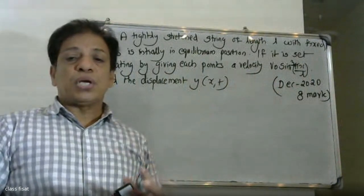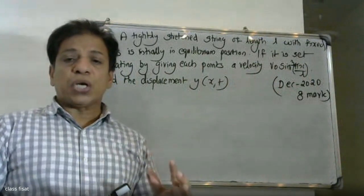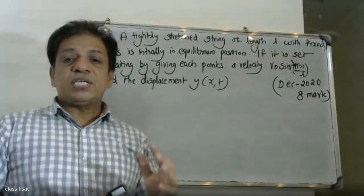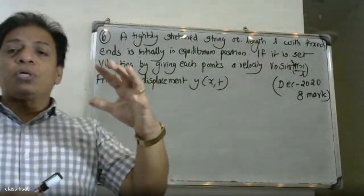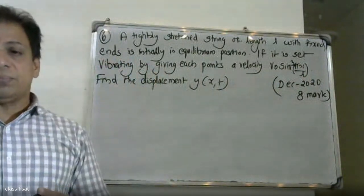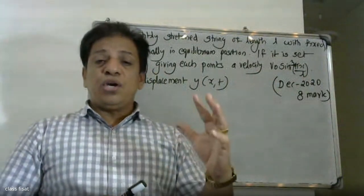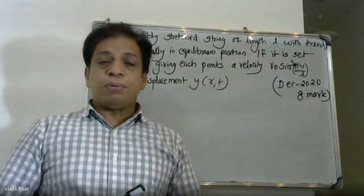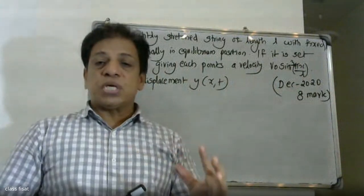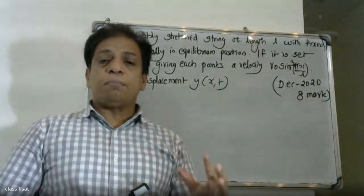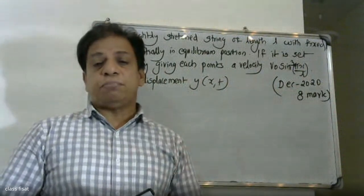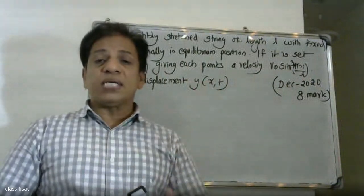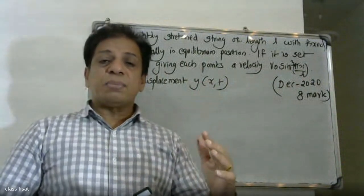The wave equation is ∂²y/∂t² = c²·∂²y/∂x². The most suitable solution is y(x,t) = (c1·cos(px) + c2·sin(px))(c3·cos(pbt) + c4·sin(pbt)).